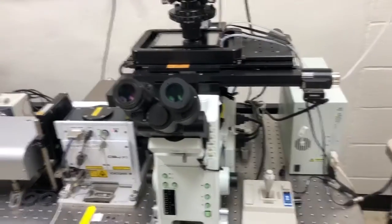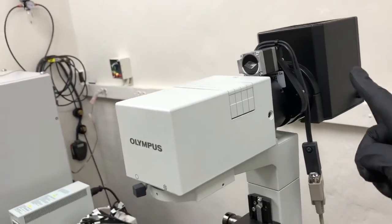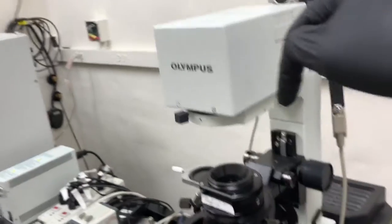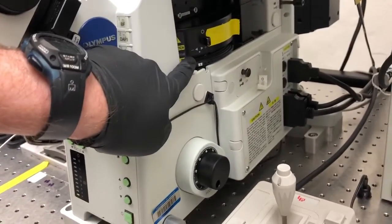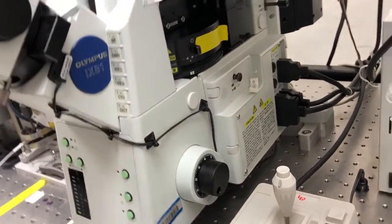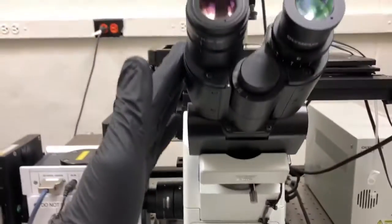So on the microscope, the brightfield illumination comes from this lamp here, goes through here, down through the condenser, into the sample, through a filter cube down here. And then the light can go either to the camera ports on the left or to the eyepieces here.